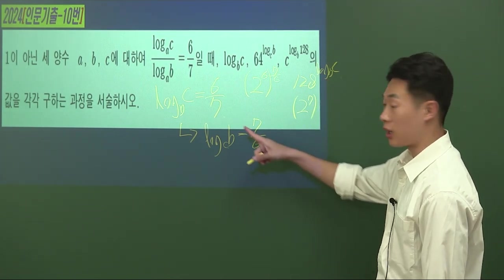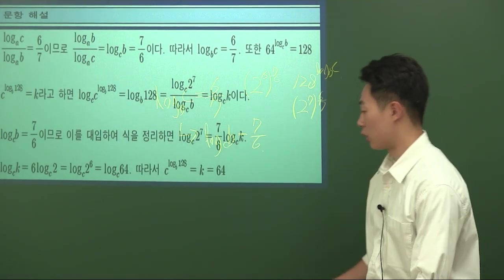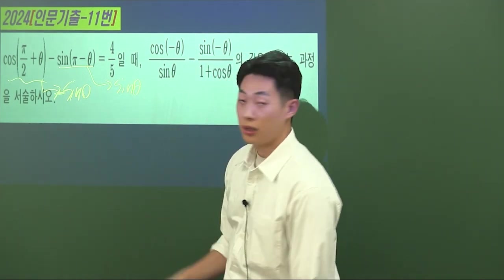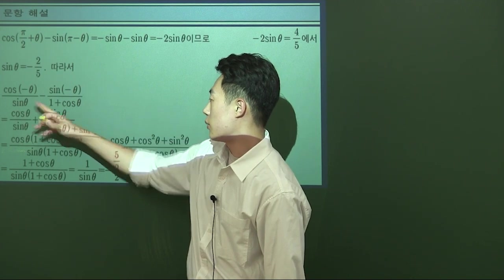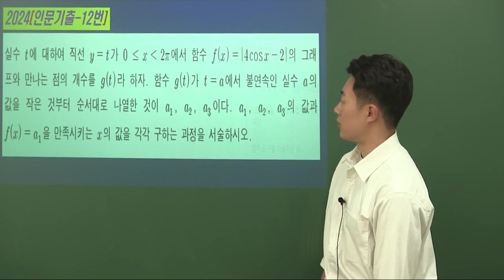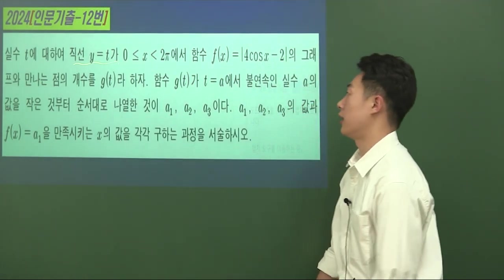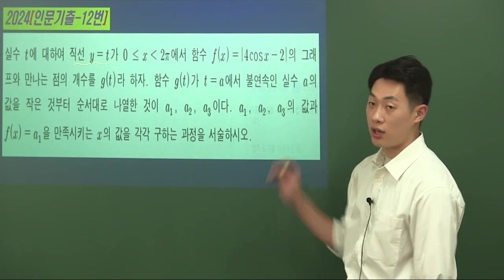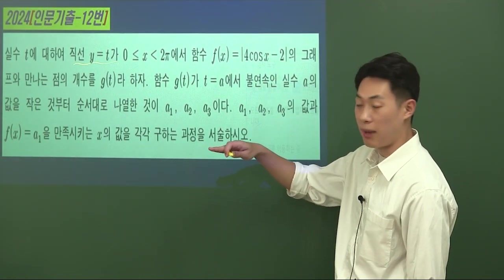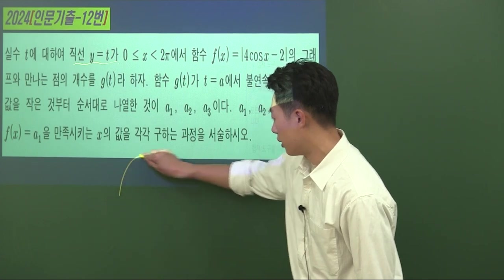2025년도 수시모집 요강을 보면 논술 100%에 수능 최저가 있습니다. 수능 최저가 있긴 하지만 그렇게 높은 수준을 요구하지는 않기 때문에, 정시보다는 약술형 논술을 노려서 가천대학교에 정확하게 포인트를 짚어 가는 게 좋겠습니다. 보통 3점에서 4점 초반대 난이도의 문제들로 구성되어 있어 충분히 도전할 만한 가치가 있습니다.